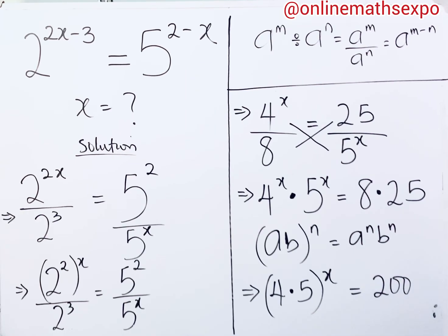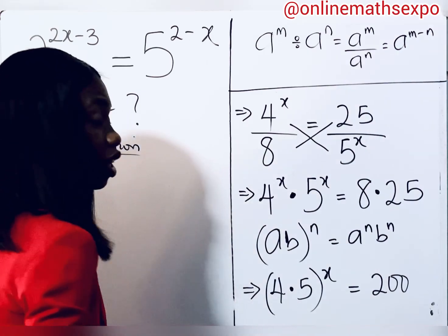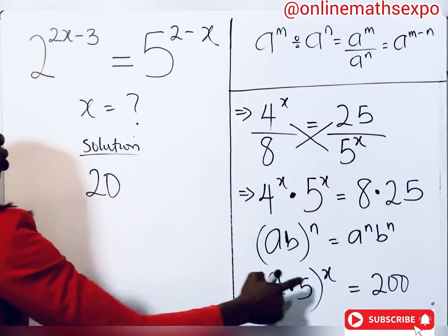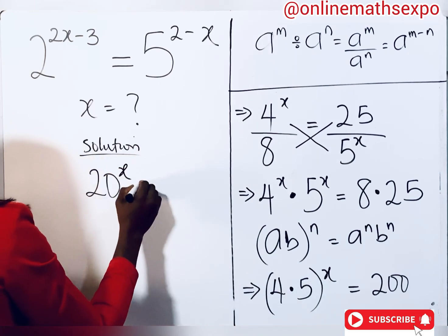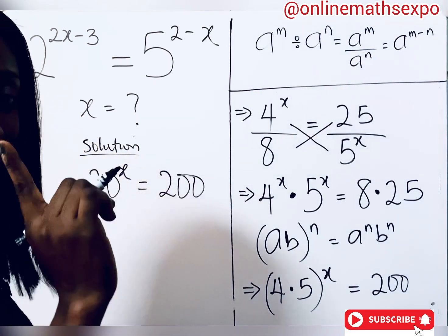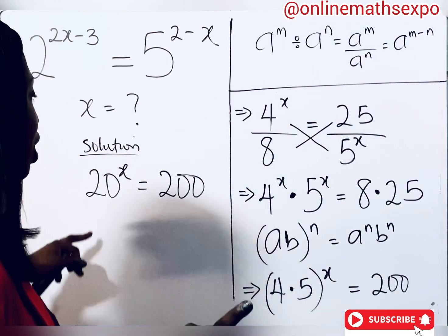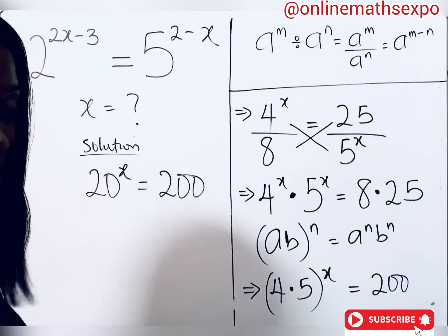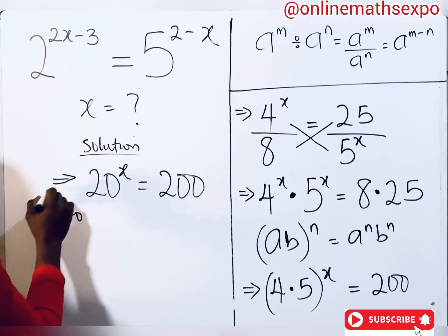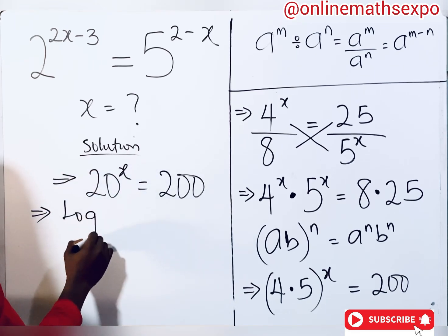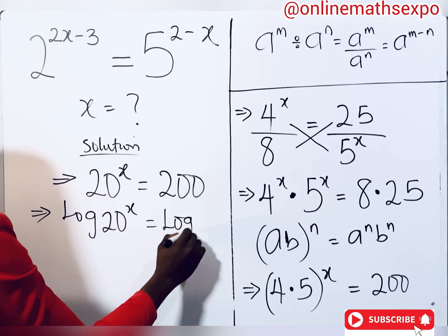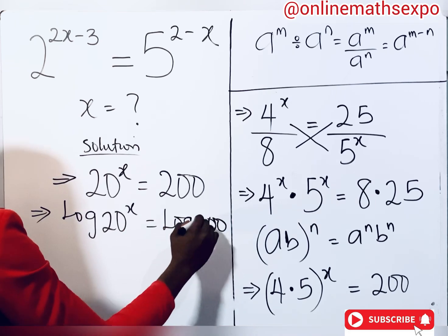So we have 20 to the power of x equal to 200. To get x, we take the logarithm of both sides. This gives us log of 20 to the power of x equal to log of 200.